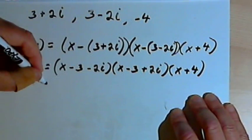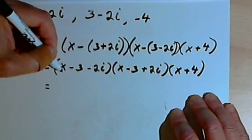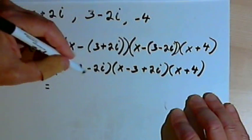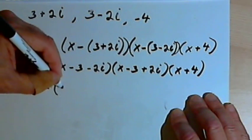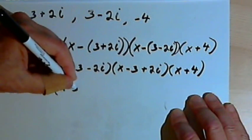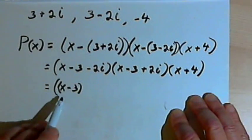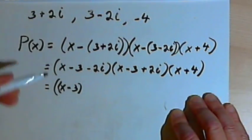And now I'm going to put some parentheses back in. I'm going to take this first one, x minus 3 minus 2i. And I'm going to think of that x minus 3 as being just a little binomial all by itself, and then I'll still have this minus 2i.